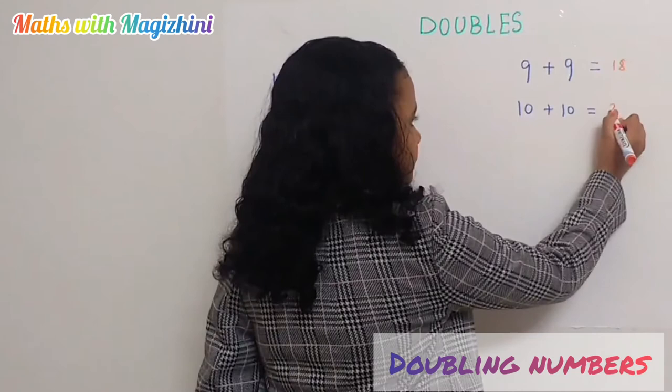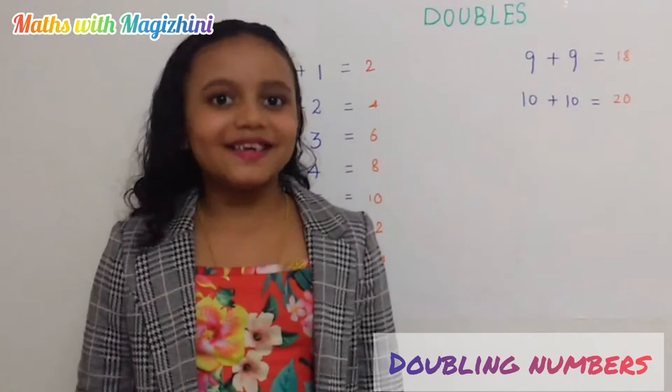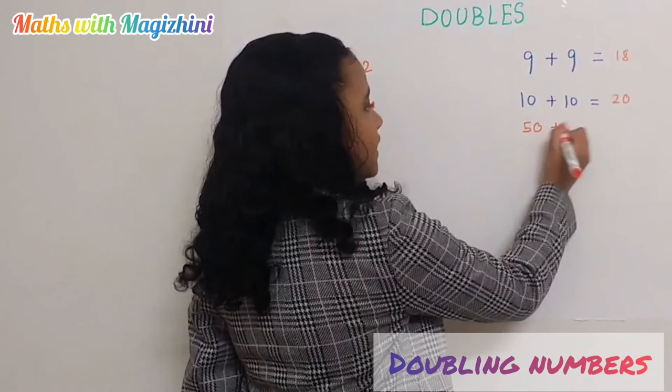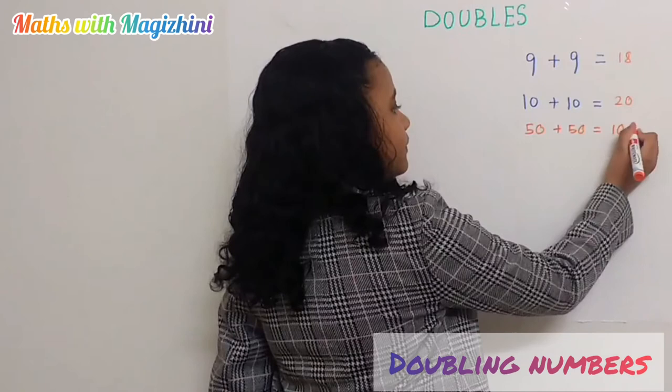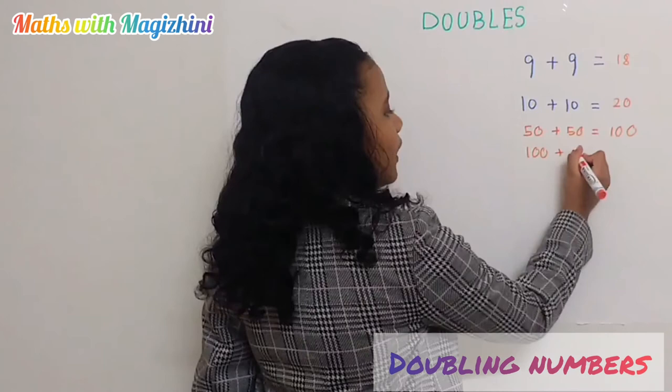Let's do two more problems but with bigger numbers. 50 plus 50 equals 100. 100 plus 100 equals 200.